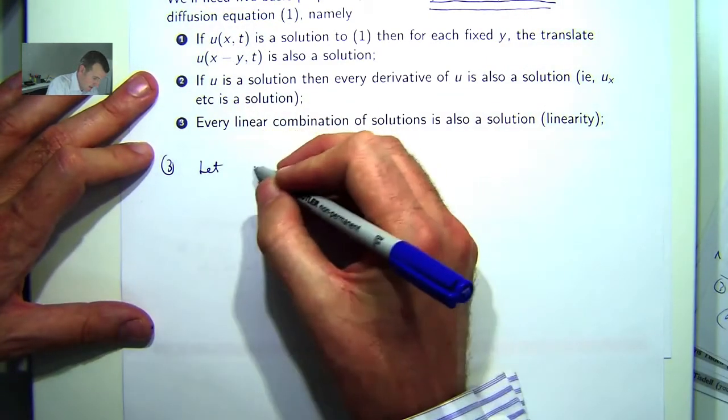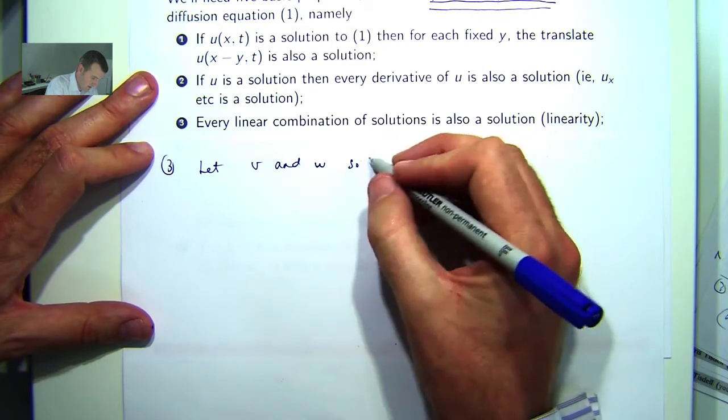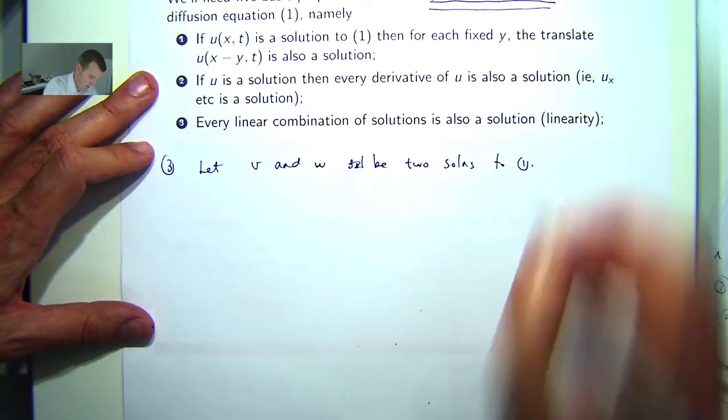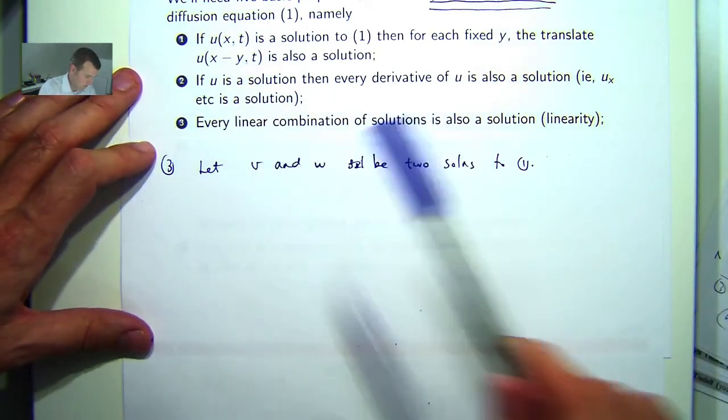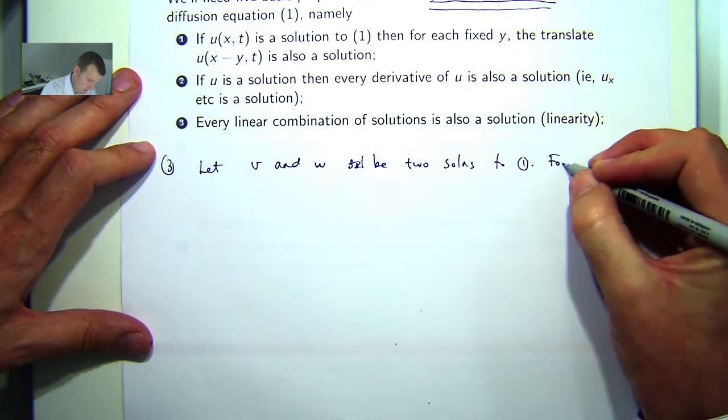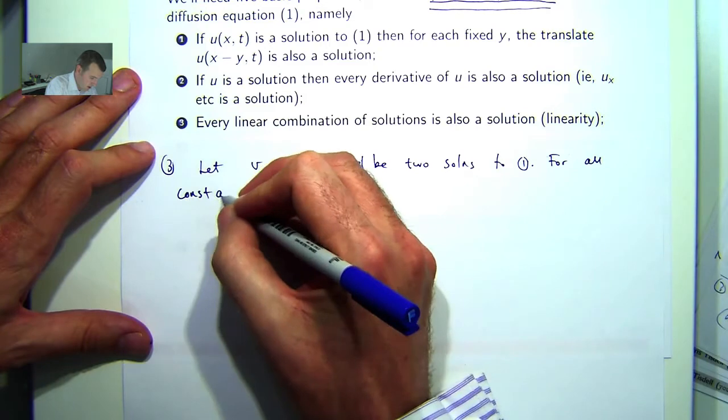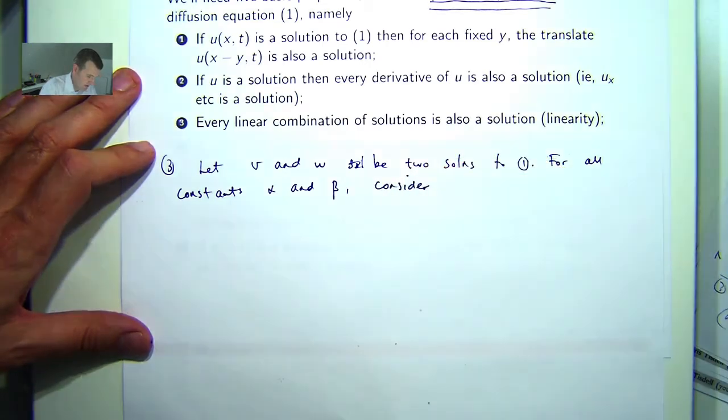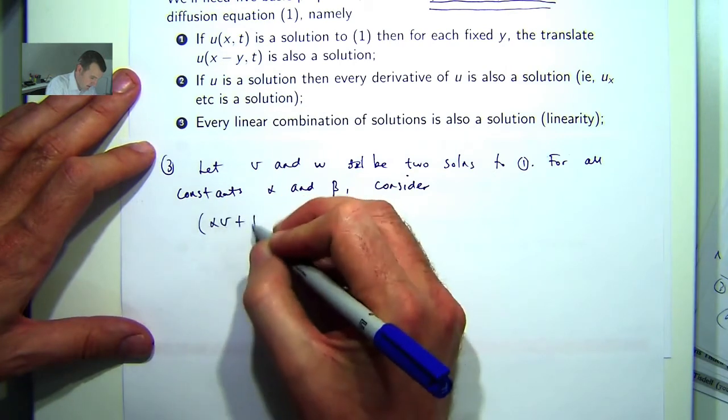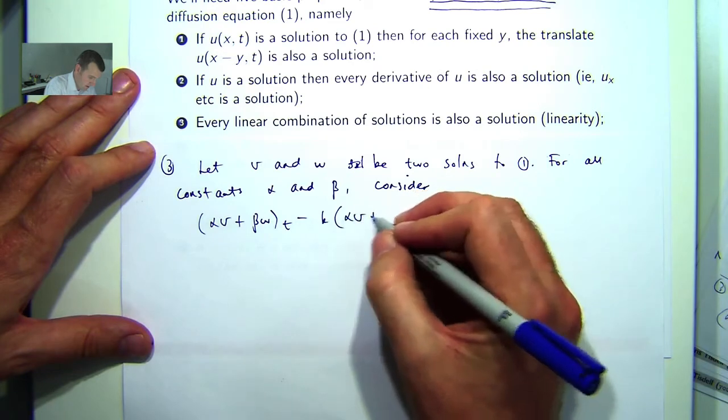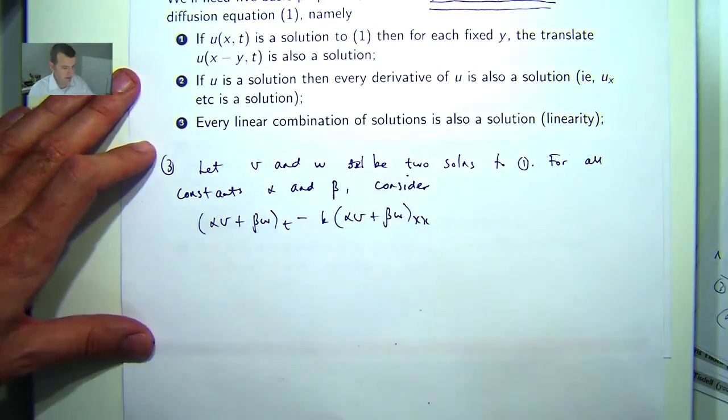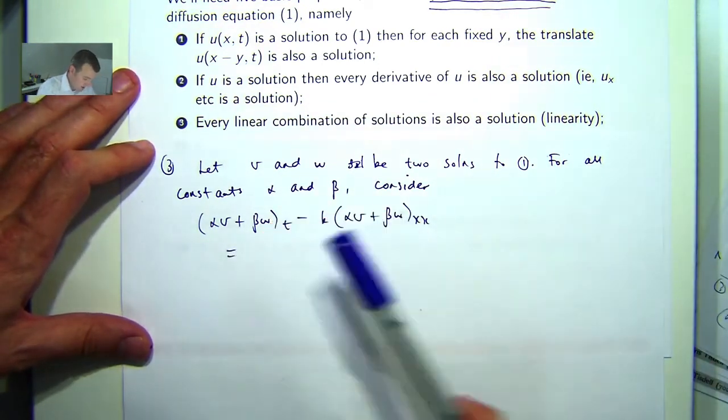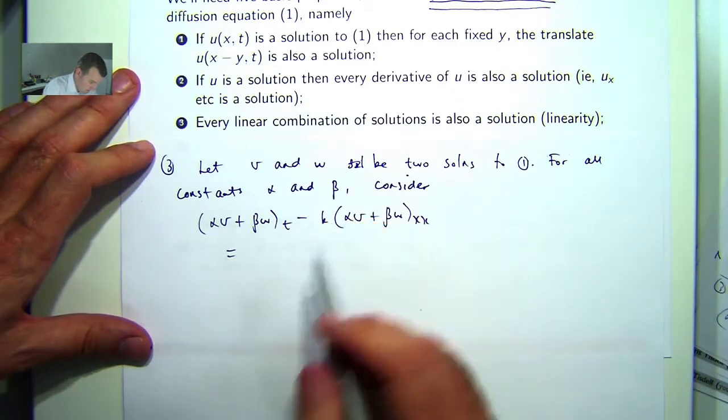So let's say v and w be functions of x and y. What we want to do is show that every linear combination of these two solutions is also a solution. So for all constants say alpha and beta consider the following. So we want to show that this is equal to 0. Then this linear combination will satisfy the original PDE 1. So this is just moving the derivatives around a bit. So if we expand this bracket.